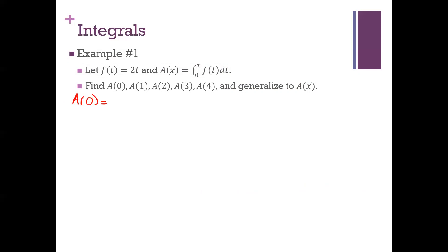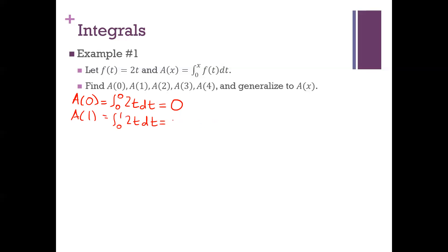What do we think A(0) would be equal to? Zero — because it's going to be an integral from zero to zero, so it doesn't even matter what the function is. Anytime you're integrating over an interval with no width, that integral is zero. How about A(1)? A(1) is the integral from zero to one of 2t dt. The anti-derivative is t squared, evaluated from zero to one — that's one squared minus zero squared, which is just one.